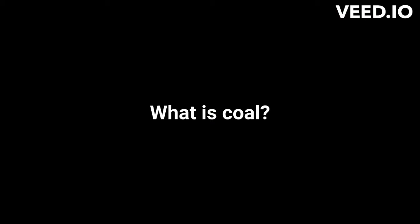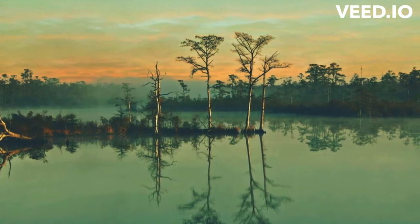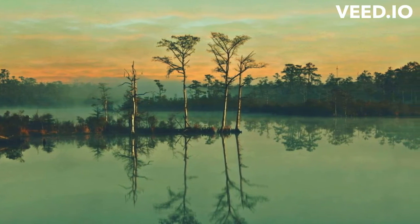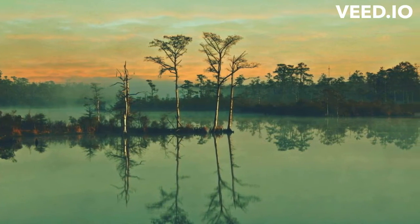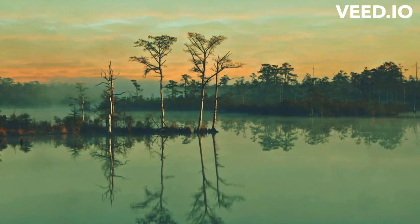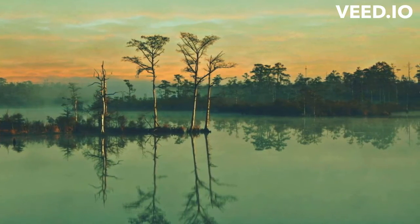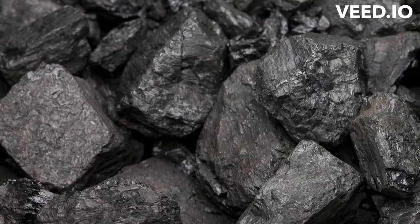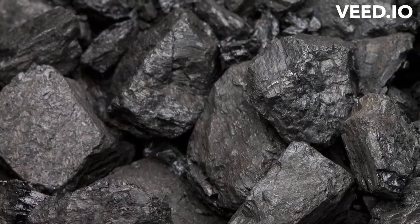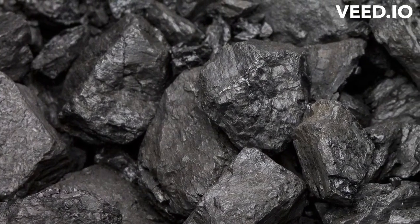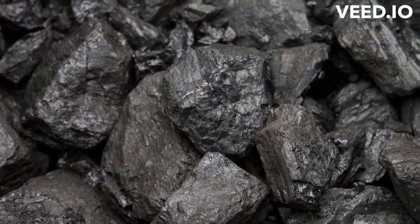Coal is a highly carbonaceous fossil fuel that has been produced as a result of vegetable debris under favorable conditions of high temperature and pressure over millions of years. It is chiefly composed of carbon, hydrogen, nitrogen, and oxygen besides non-combustible inorganic matter. Coal is also called black gold. This is found mainly in sedimentary strata, that is, layers of soil.